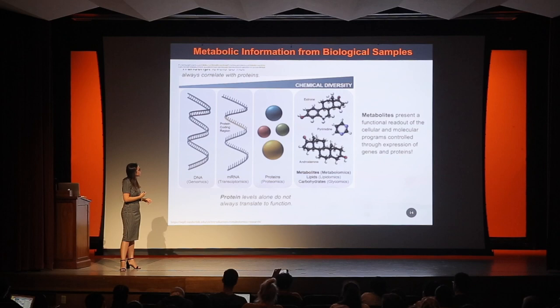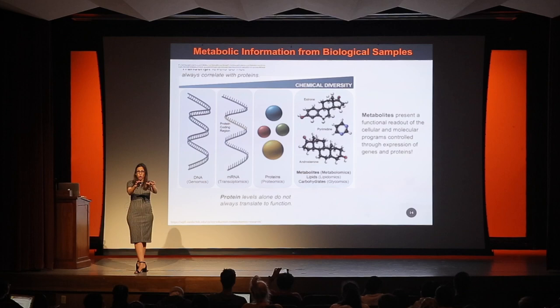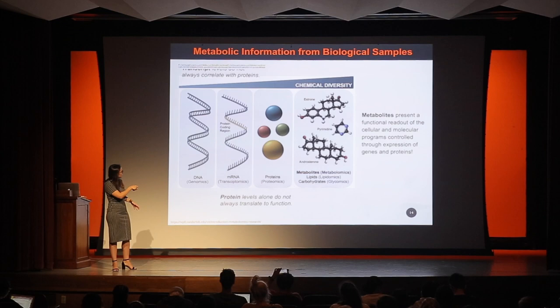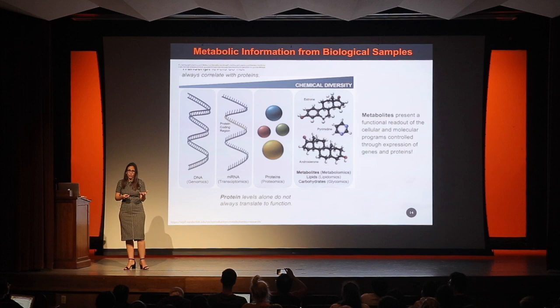A lot of people ask me why metabolites. The reason is that metabolites are really a functional readout of what's going on in the cell — they're the real-time picture of the biological processes happening in your body right now. Transcript levels don't always correlate with protein levels, and protein levels don't always translate to function. The metabolites give you a real-time picture of what's going on in your body as it relates to disease. We like to probe metabolites, and they're also really easy to get out from the tissue.